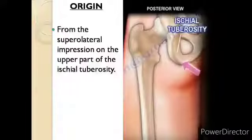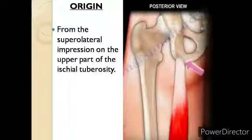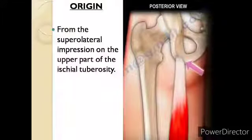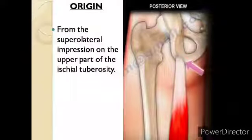Now we will talk about the origin of semimembranosus muscle. Semimembranosus muscle starts from the superior lateral impression on the upper part of the ischial tuberosity.